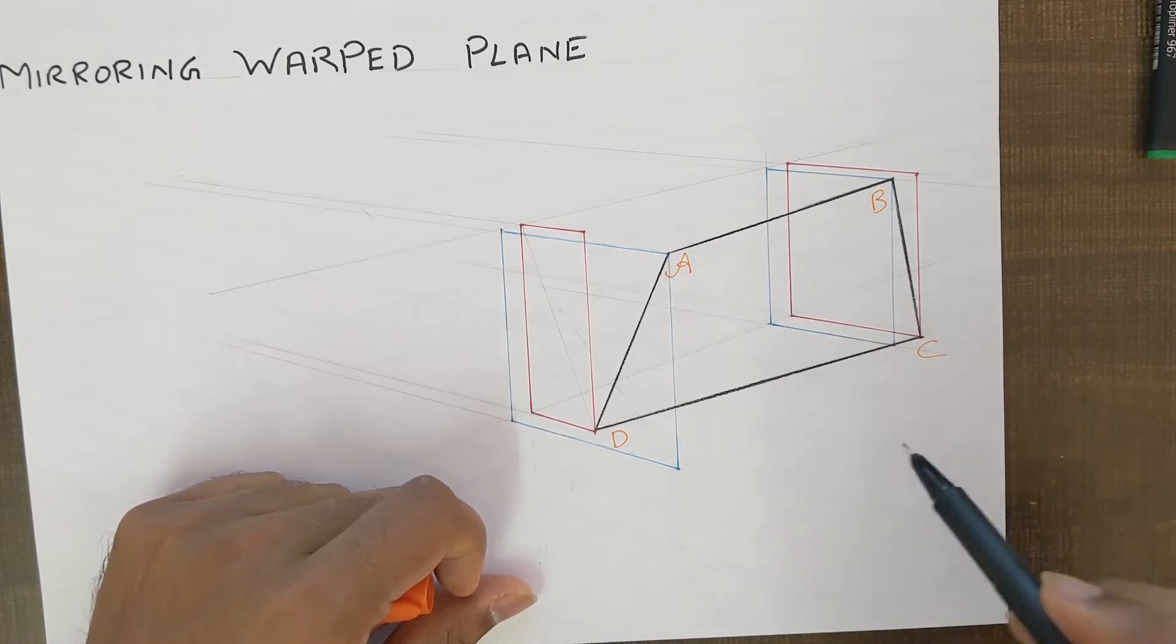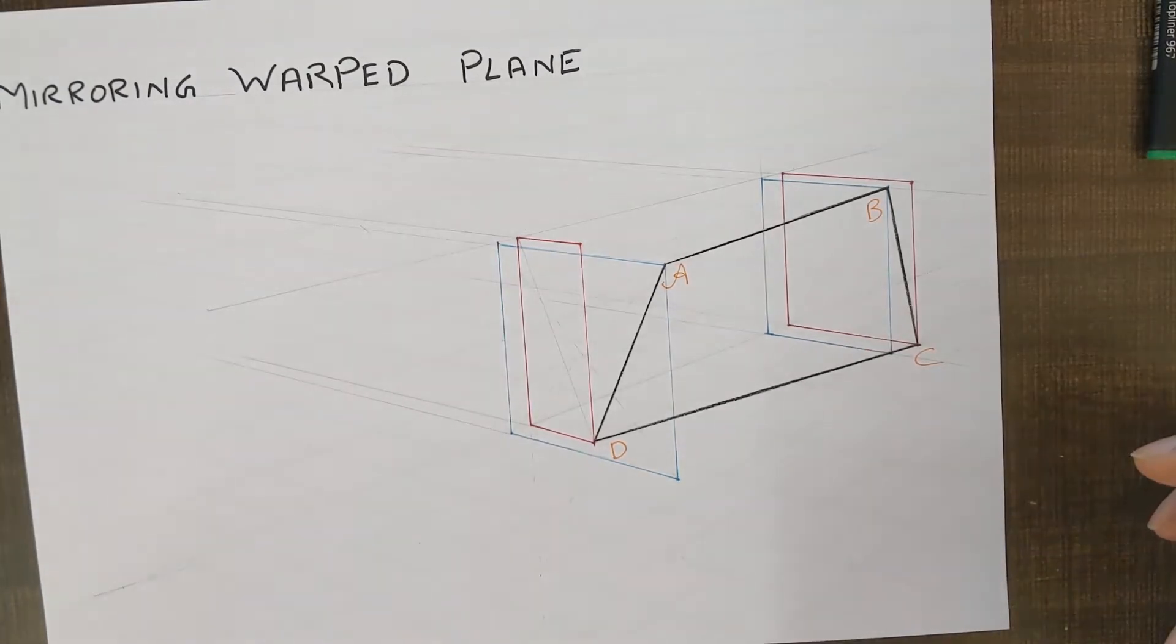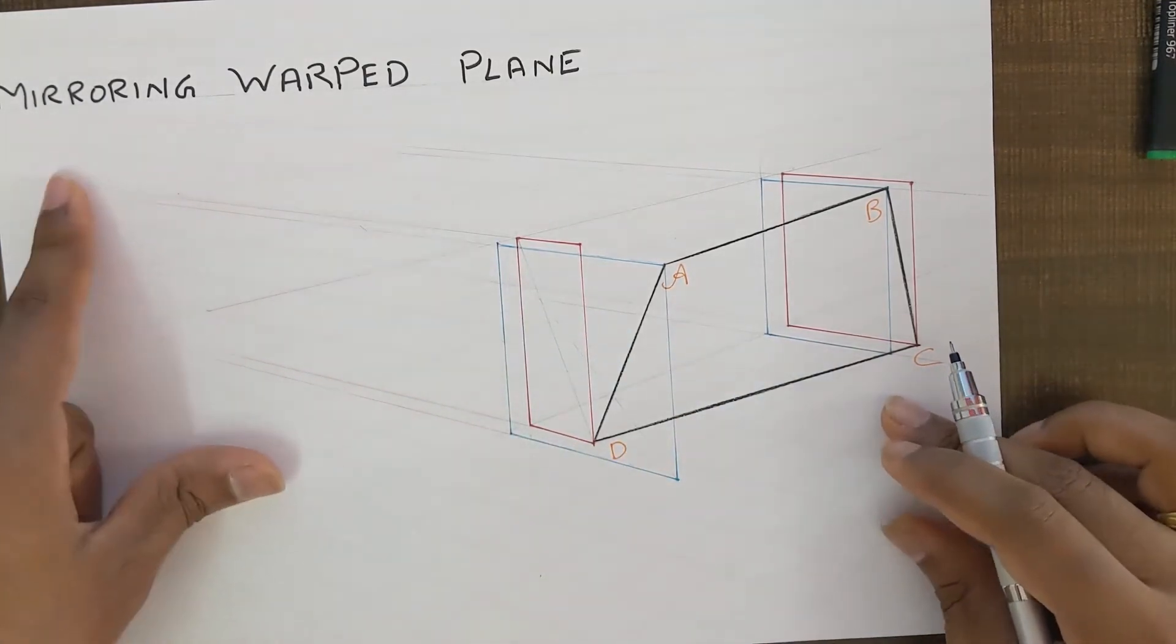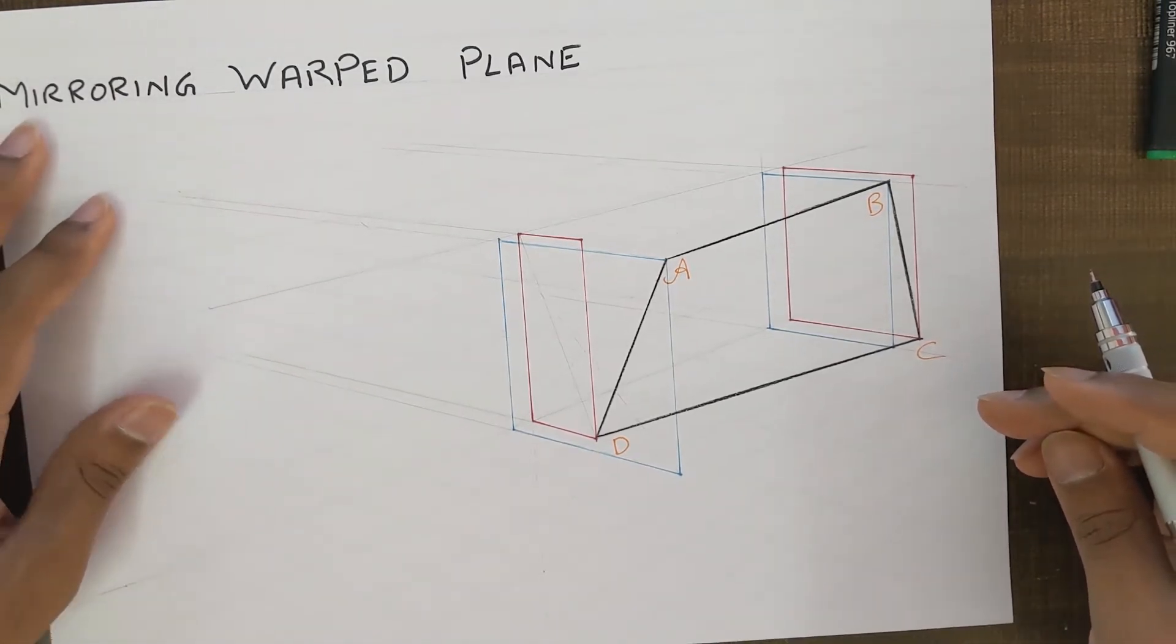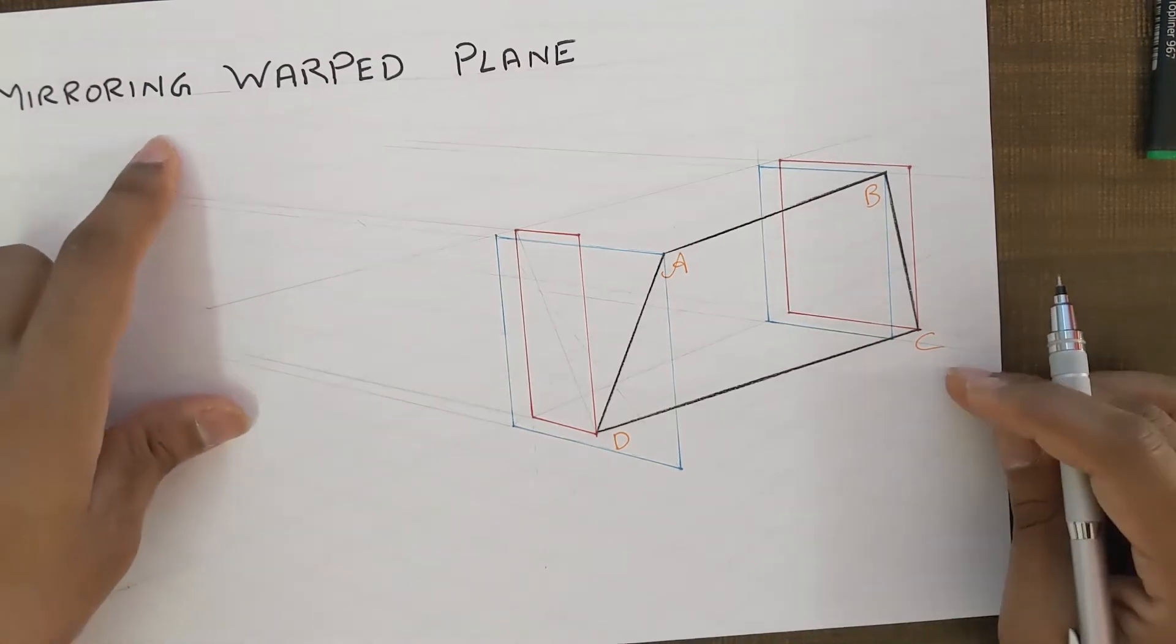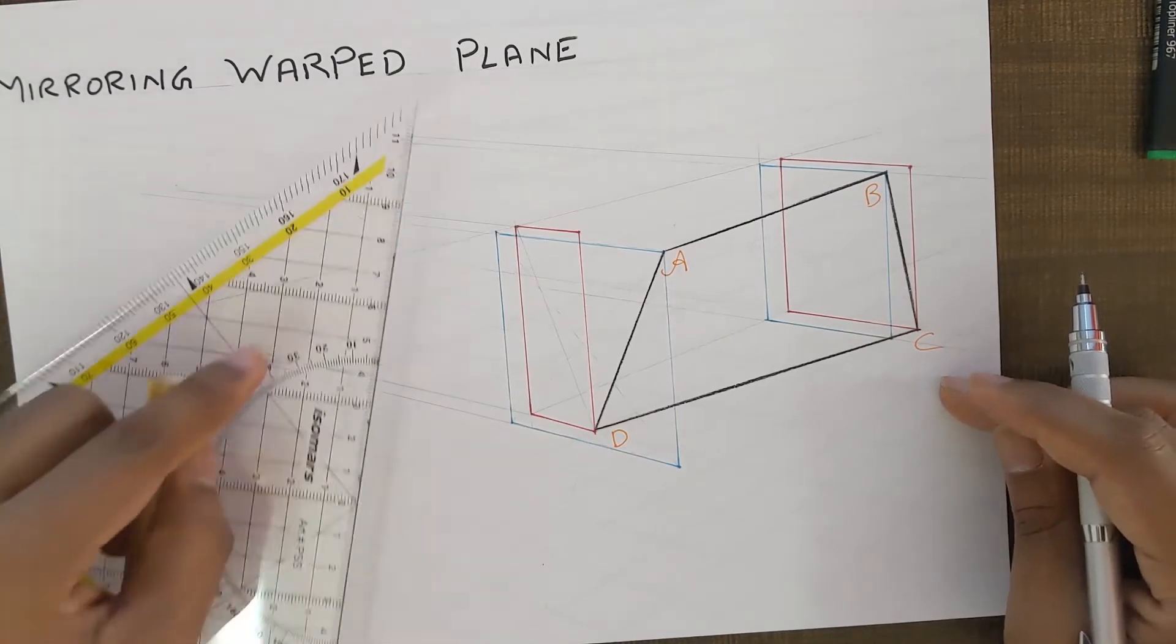So let's get started and see how it's done. All right, so the techniques which are used to mirror a warp plane, they remain the same as the techniques which we have used while mirroring a tilted plane. So the first step is we have to find the point A on the other side.